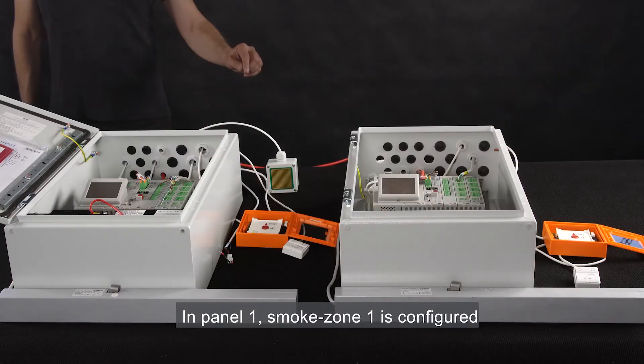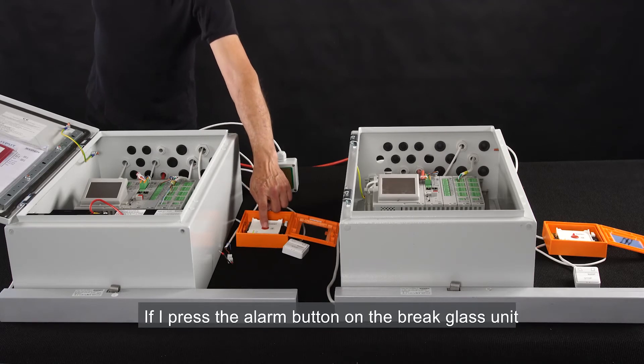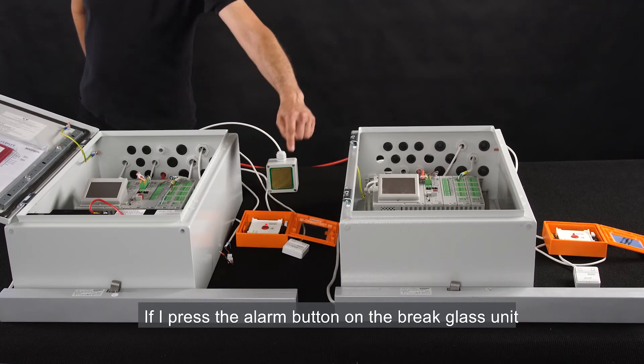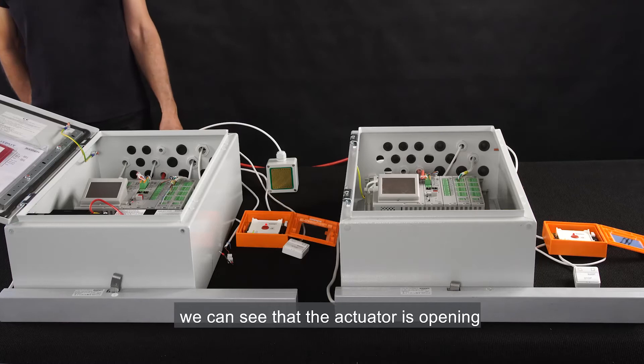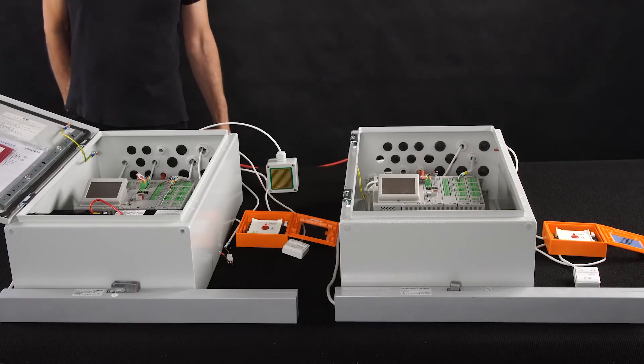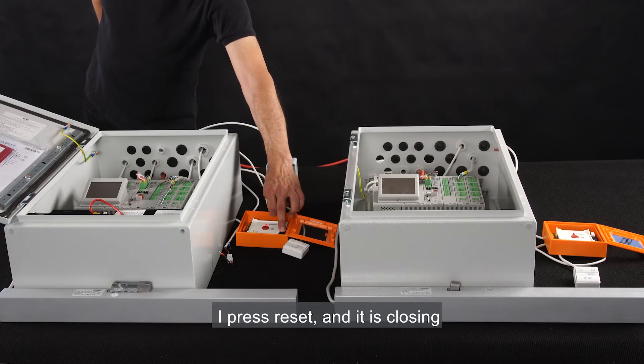In panel 1, Smoke Zone 1 is configured. If I press the alarm button on the brake glass unit, we can see that the actuator is opening. I press reset and it closes.